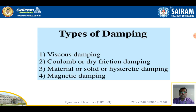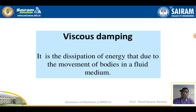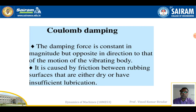The four types are: first, viscous damping; second, Coulomb or dry friction damping; third, material or solid or hysteresis damping; and fourth, magnetic damping. These are very important for examination. Viscous damping is the dissipation of energy due to the movement of bodies in a fluid medium — the energy lost as a body moves through fluid is called viscous damping.